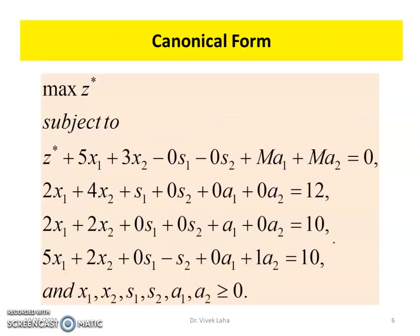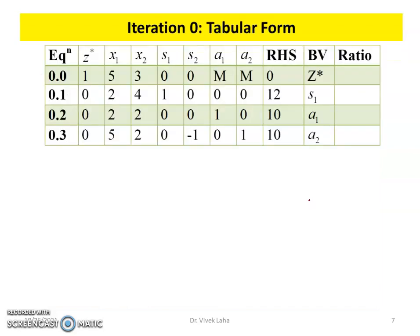This is the canonical form of the given problem, obtained by applying slack variables, surplus variables, and artificial variables and assigning this huge penalty. This canonical form of the linear programming problem can then be written in tabular form.